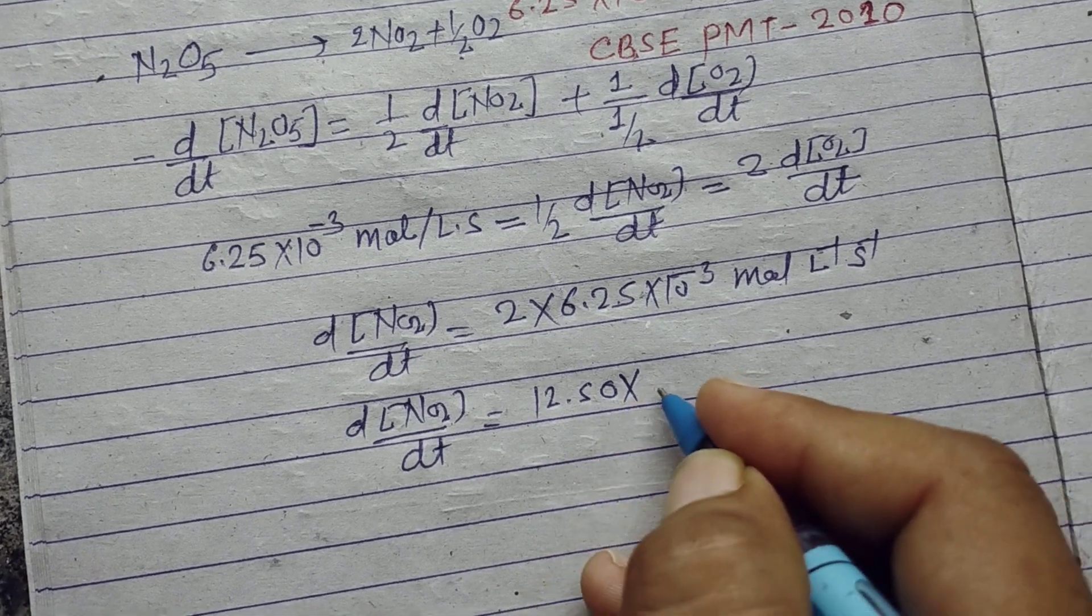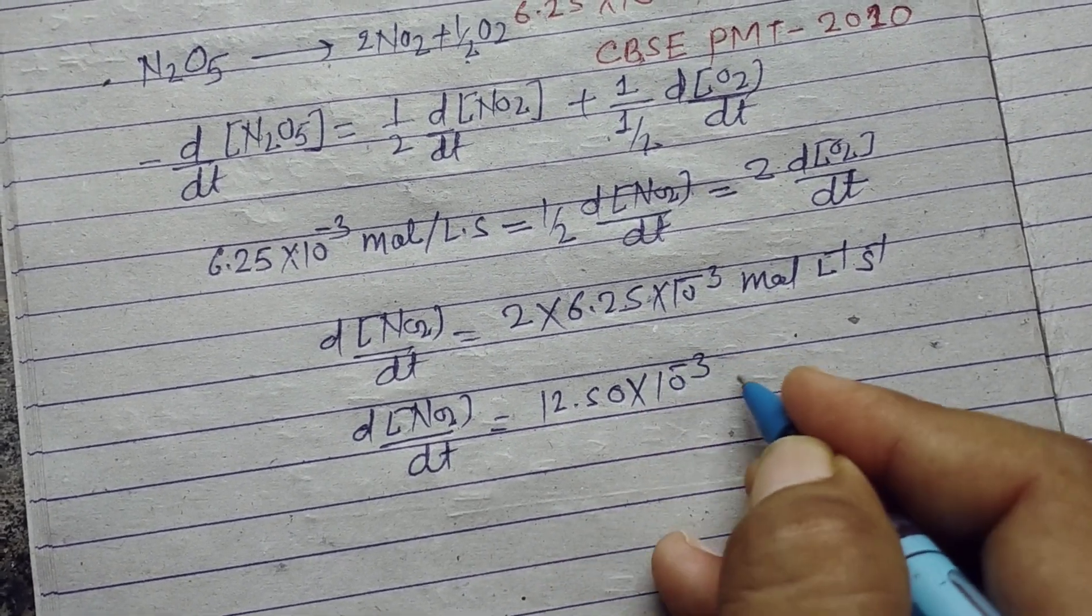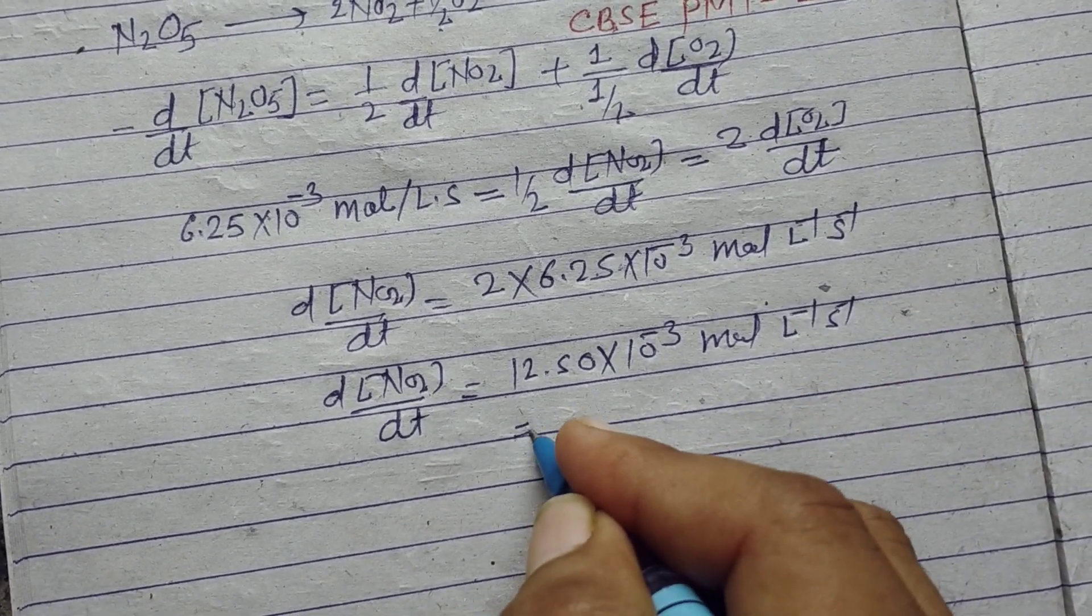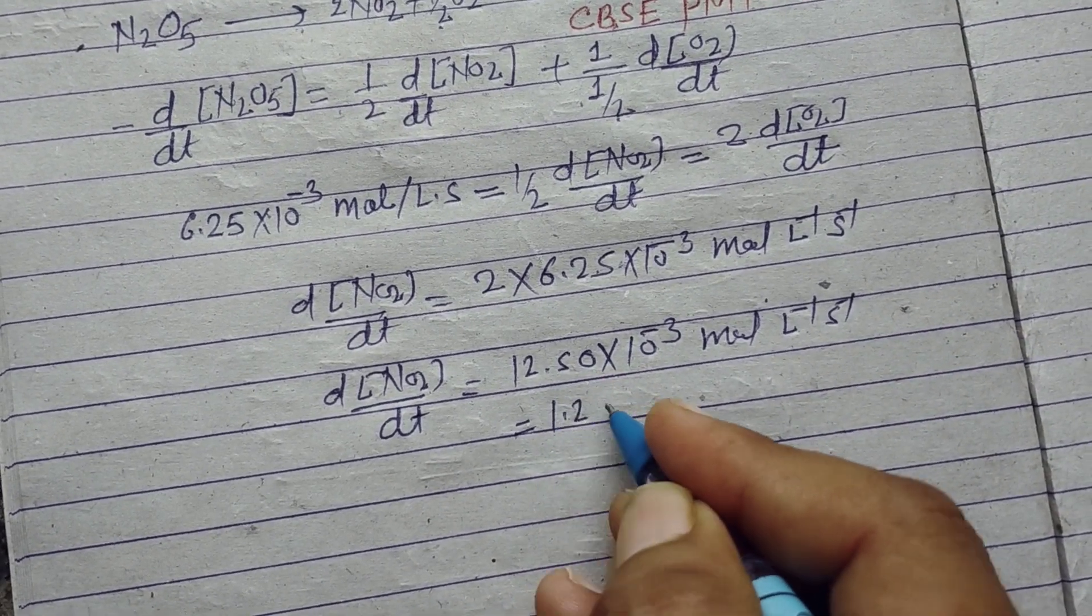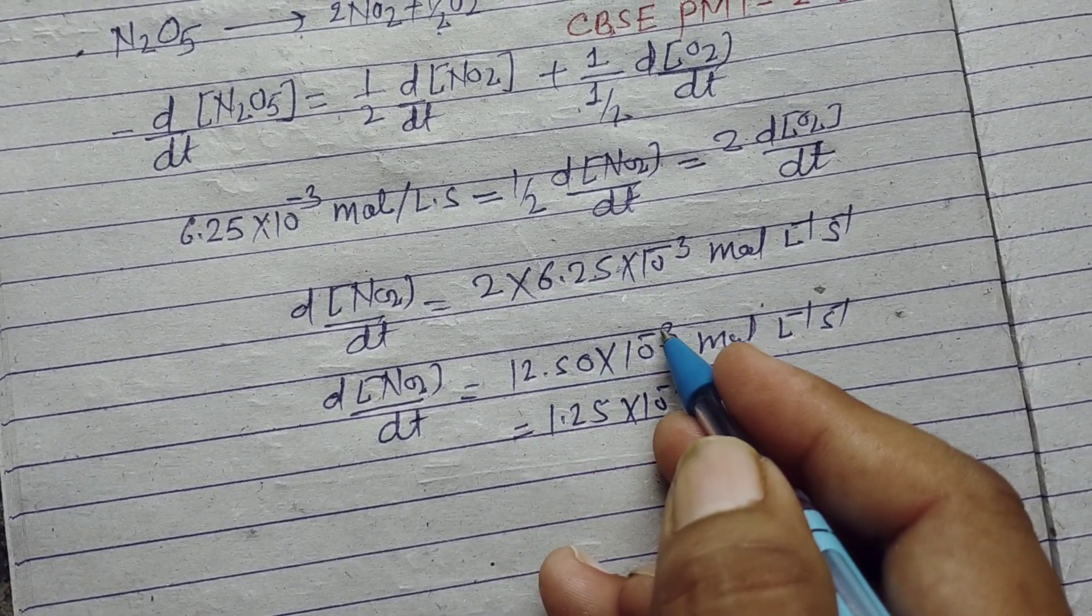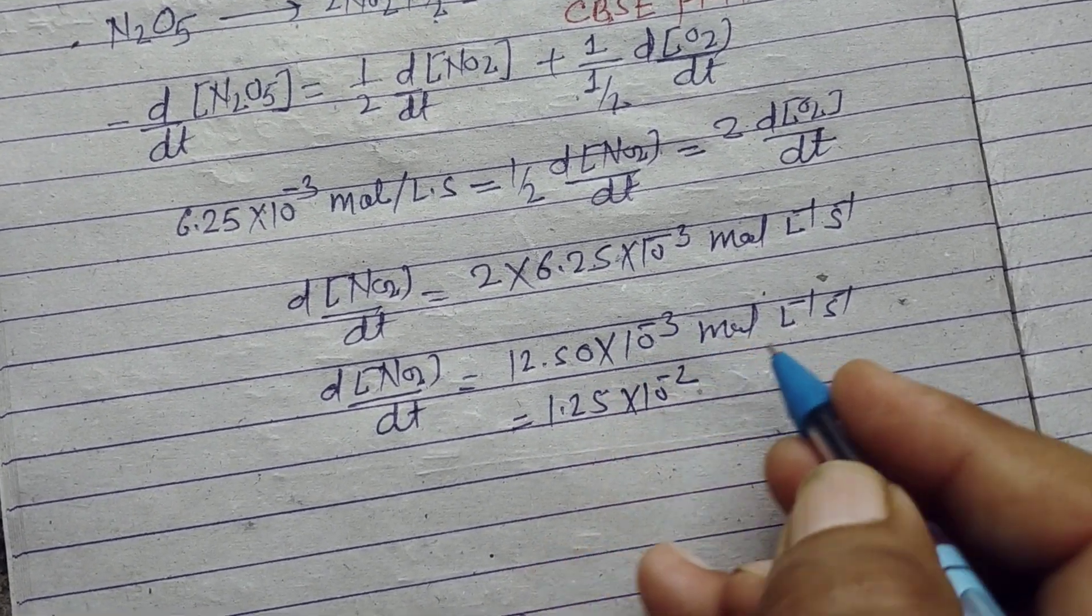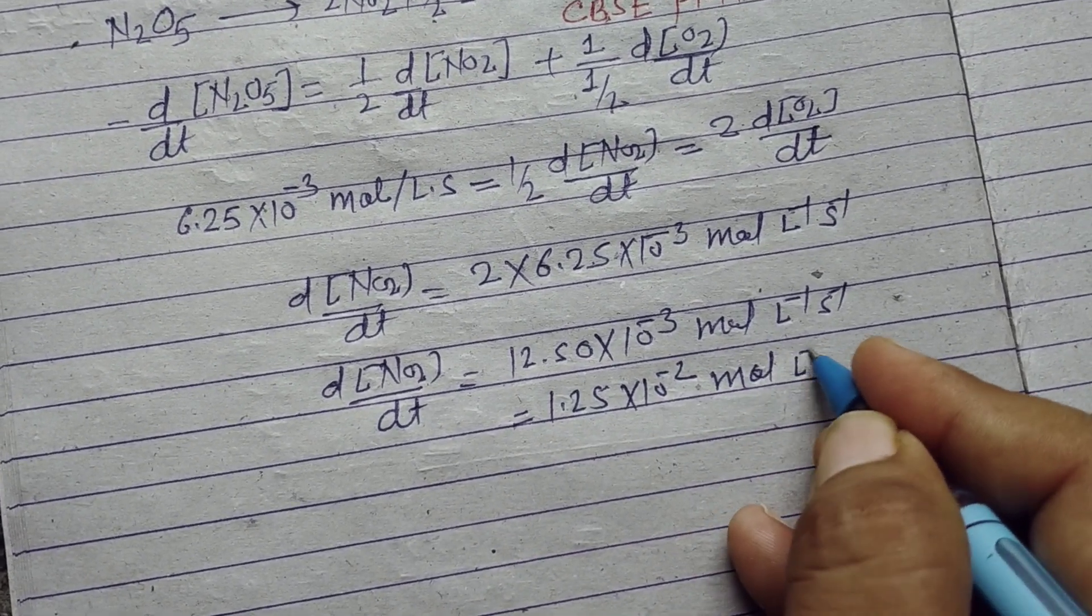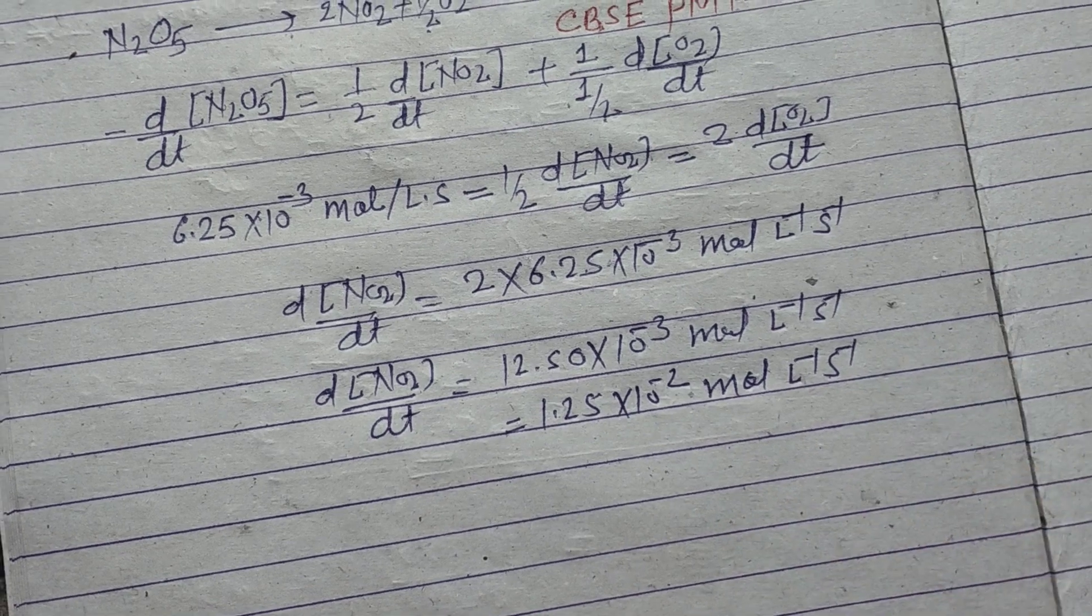So 12.50×10^-3 mol per liter per second, and this becomes 1.25×10^-2 mol per liter per second.